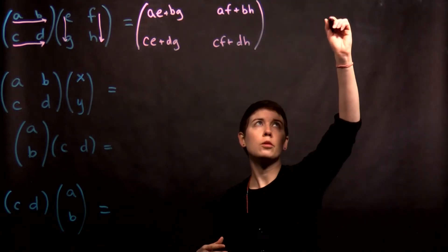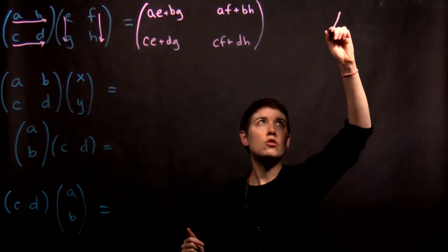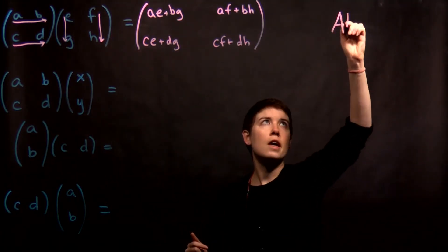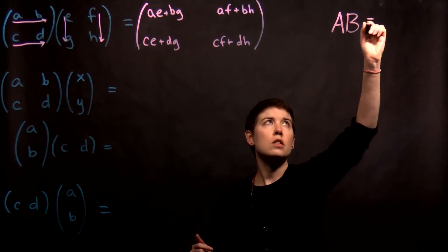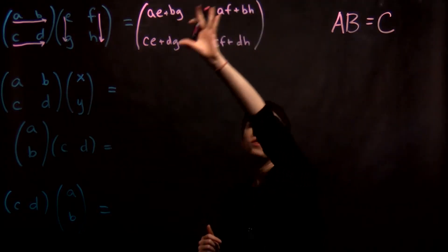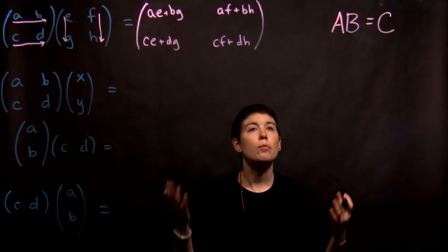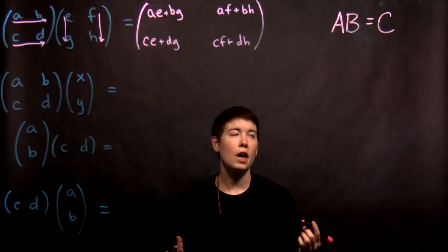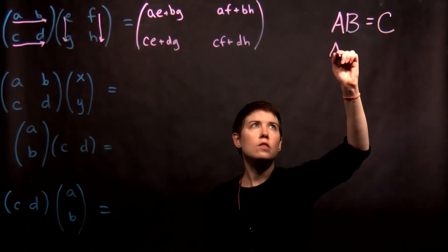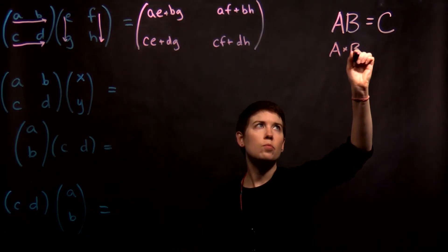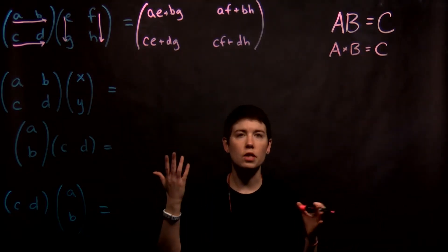How we can write that out in variables is that if that first matrix was A, we can say A times B equals matrix C, where this is now our matrix C. So remember we're using capital letters to represent that. Now if you want you can write this as A times B, that's going to mean the same thing.